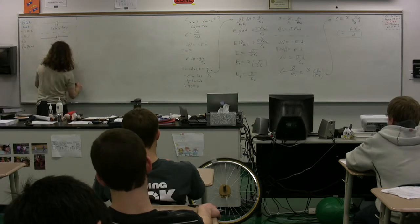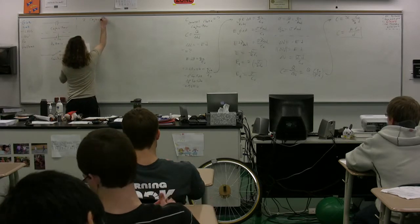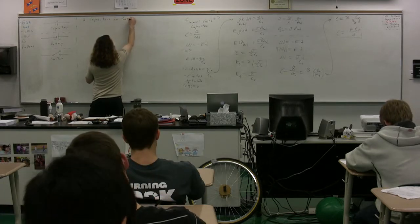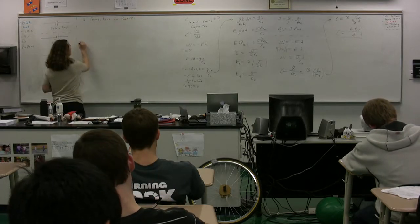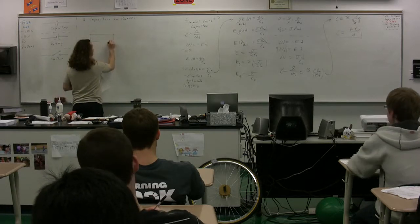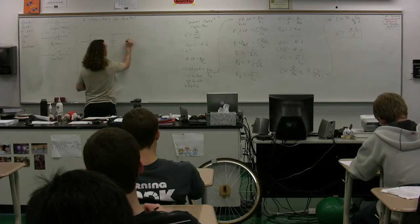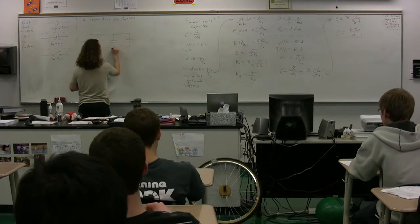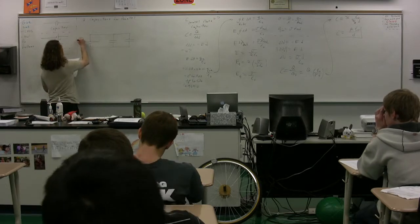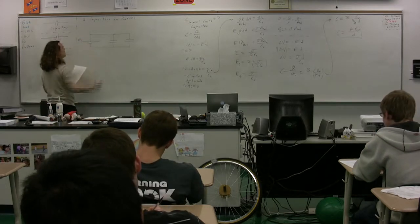Let's take a look at capacitors in parallel. Two capacitors in parallel — we start with our battery, then we have a capacitor and a second capacitor. This is two capacitors in parallel. We'll identify this as the potential difference across the battery: delta V sub T.